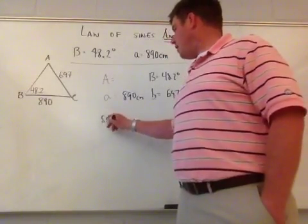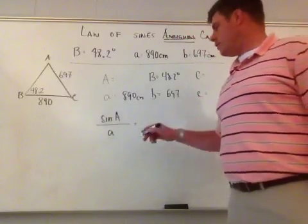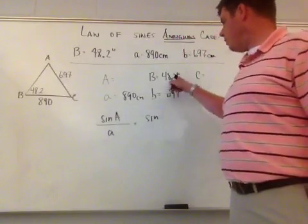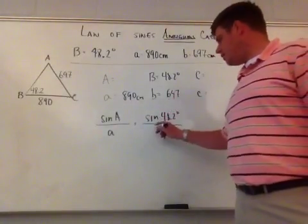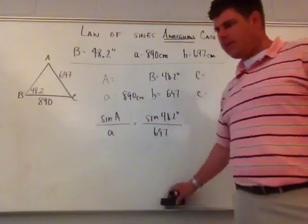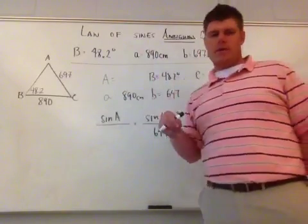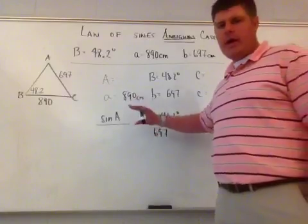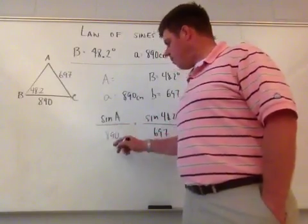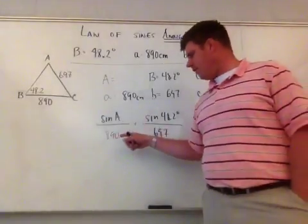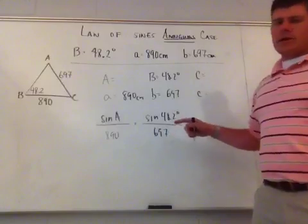Using the Law of Sines: sine of A divided by side a equals sine of angle B divided by side b. So sine of A over 890 equals sine of 48.2 degrees divided by 697.